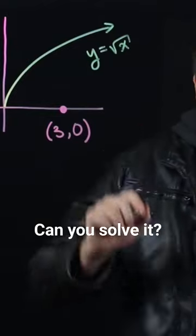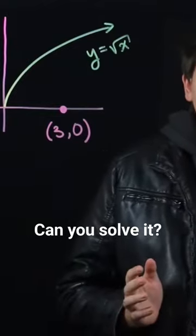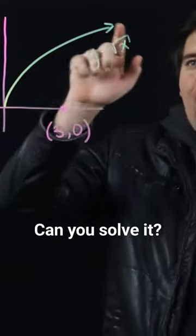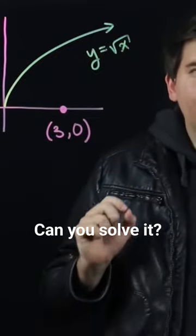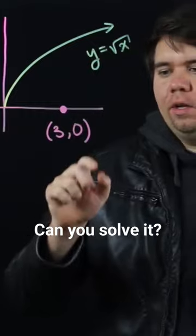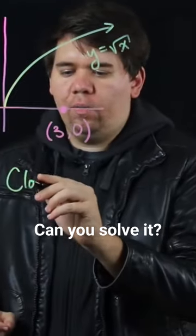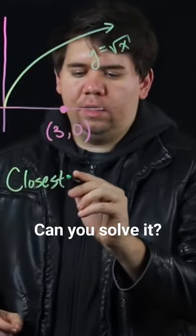Consider the graph of the function y equals the square root of x. What point on this graph is closest to the point (3, 0)? What is the closest point?